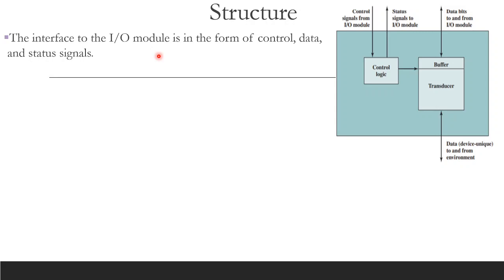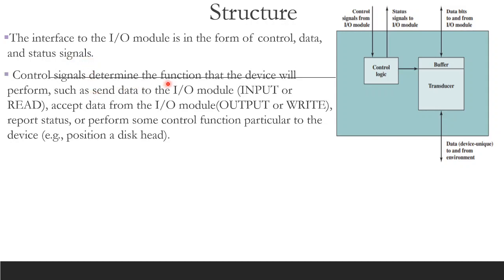The interface to the IO module is in the form of control, data, and status signals. Control signals determine the function that the device will perform — which includes: send data to the IO module, accept data from the IO module, report status, or perform some control function particular to the device.